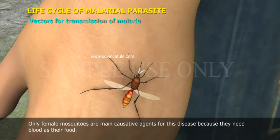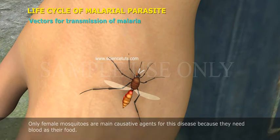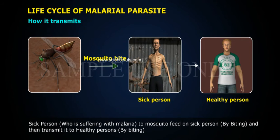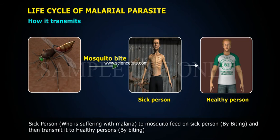Only female mosquitoes are the main causative agents for this disease because they need blood as their food. A sick person suffering with malaria is bitten by a mosquito, which then transmits it to a healthy person by biting.